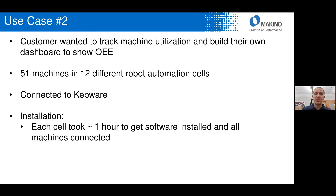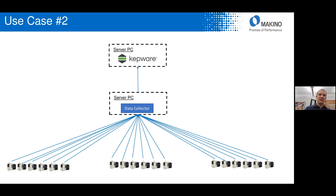Our next example was a customer that wanted to track machine utilization and build their own dashboard to show OEE. This customer had 51 Makino machines in 12 different robot automation cells. They wanted the data published into Kepware so their third-party system could read from there. Again, each cell took about one hour to get the software installed and all machines connected. In this case, we had one server PC running the Data Collector connected to all 51 machines, which sped up the installation process. Kepware had one place to connect to and was able to pull data in.